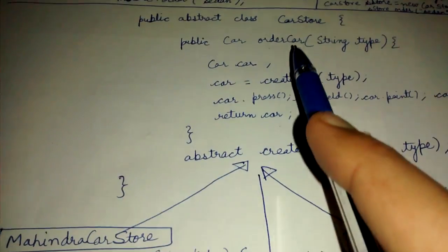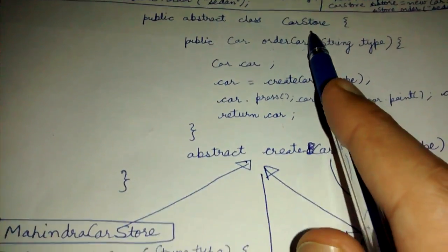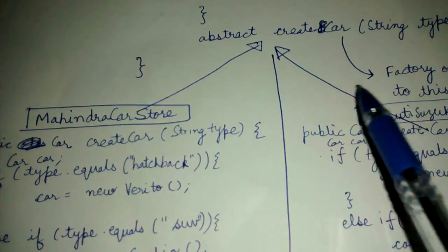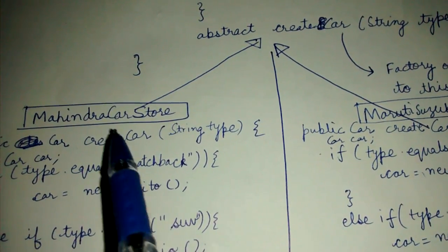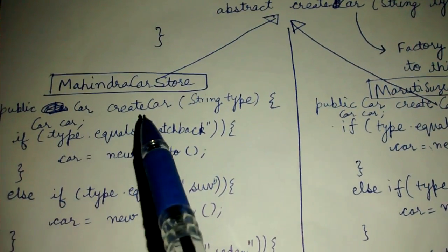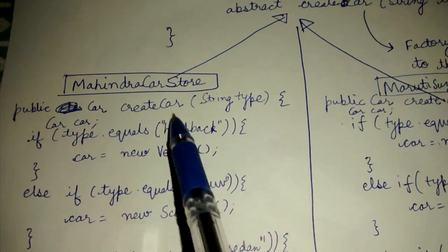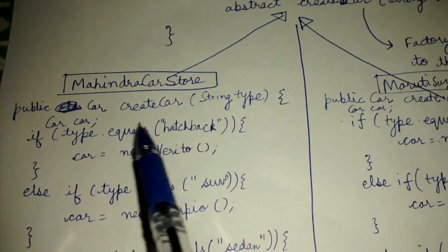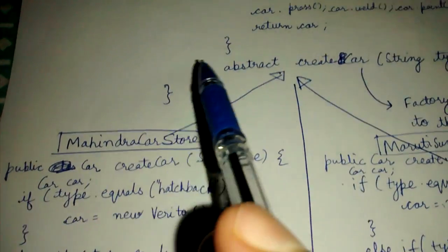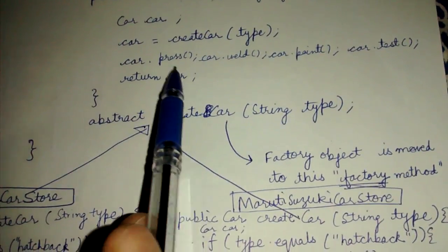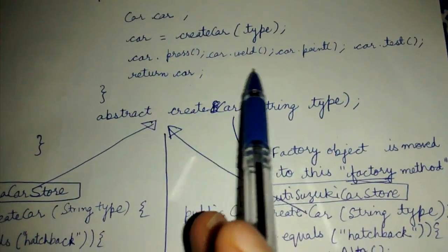Hence this is called the factory method, and hence this pattern is named the factory method pattern. This is our base car store class. Whatever car stores implement this base car store have to provide their own definition for the create car method. Other things like car.press, weld, and paint — these things they inherit from me and hence have to obey the same behavior.